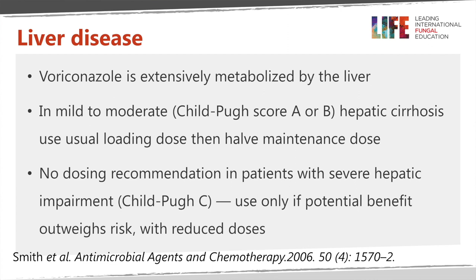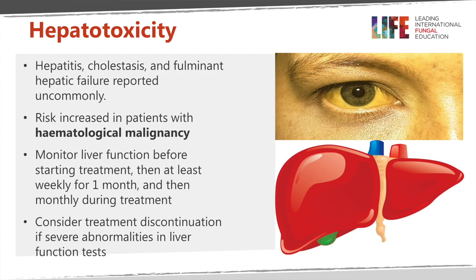Because voriconazole is metabolized by the liver, you can get accumulation in patients with liver dysfunction. For mild to moderate dysfunction — Child-Pugh score A or B, associated with mild or moderate cirrhosis — we give a normal loading dose but then half the standard maintenance dose, such as 200 milligrams once a day or 100 milligrams twice a day. We don't know what to do in severe liver disease. Severe liver disease is associated with invasive aspergillosis at a rate of around 2 to 3%. Measuring levels will be helpful but the drug probably won't metabolize well, posing a risk. With liver dysfunction, you can get hepatitis, cholestasis, and even hepatic failure — as described for all the azoles.